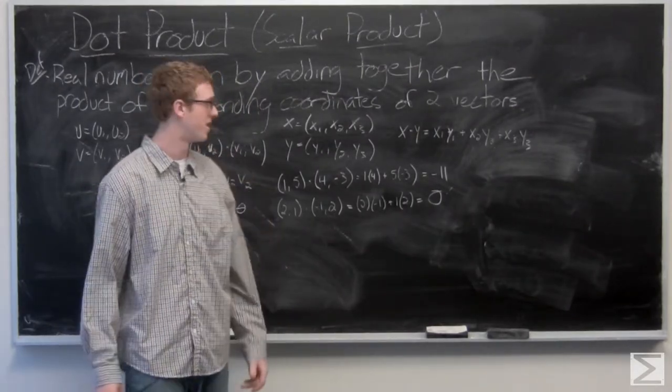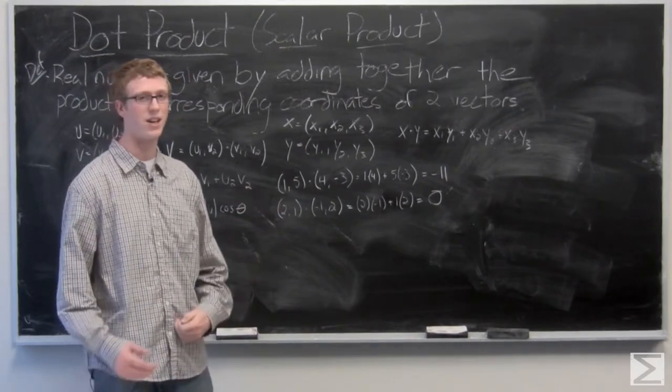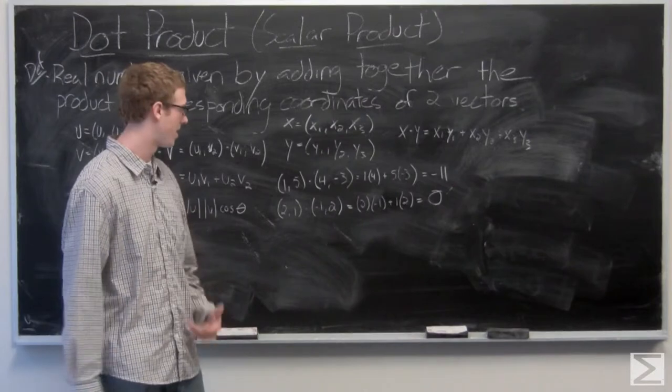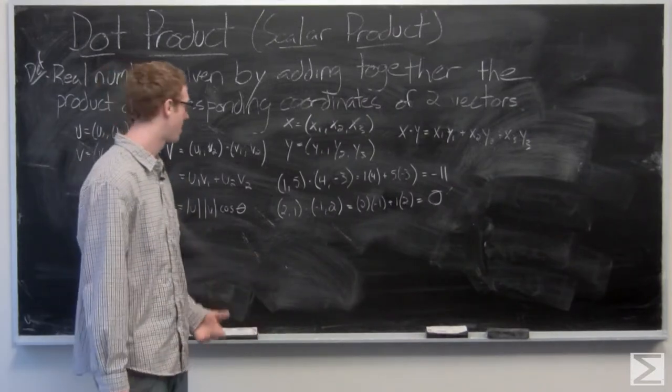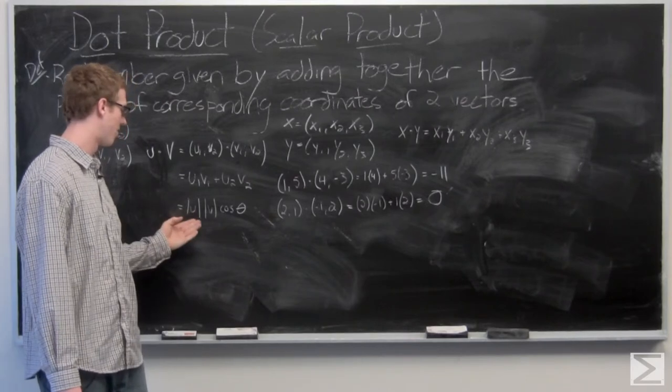So the dot product of perpendicular vectors is going to be zero. Now, we can see that perpendicular vectors, the angle between them is going to be 90 degrees. Makes a lot of sense that when you have perpendicular vectors, you can't have a vector with no magnitude.